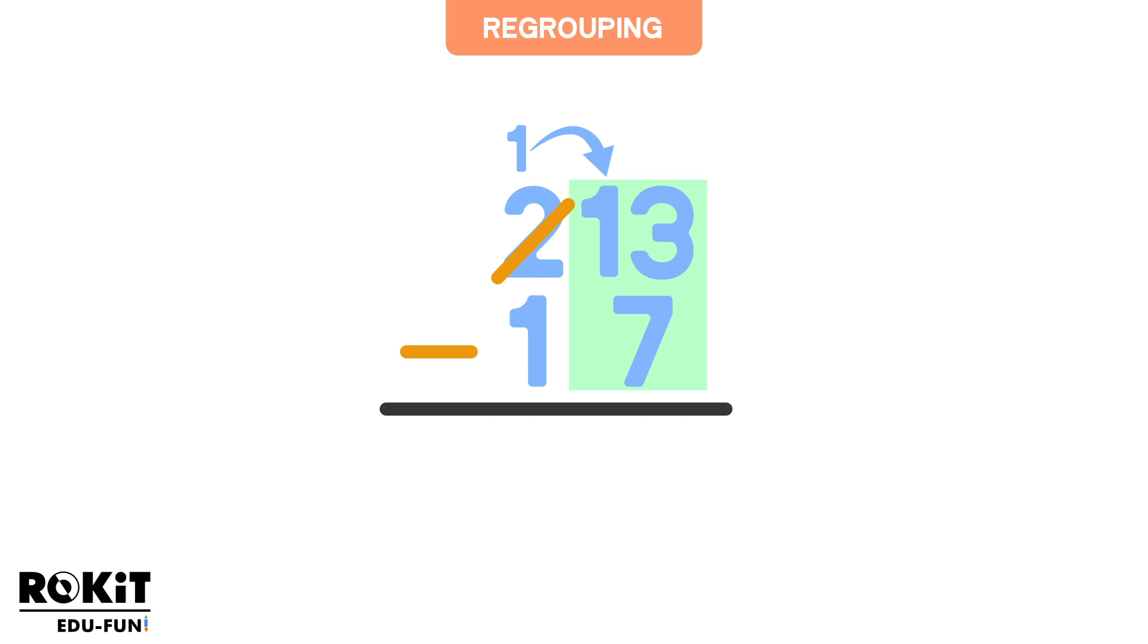So now what is 13 minus 7? Yes, 13 minus 7 equals 6. So we write 6 under the ones column.